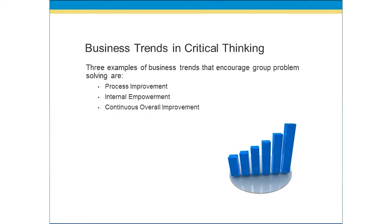There are some business trends in critical thinking that support or encourage group problem solving. The first is process improvement. Whenever an organization looks at their in-house processes and seeks out ways to improve them, that encourages a group problem-solving effort because a group is involved in the process, not just one person. Getting a multitude of people together to explore the process, look for gaps, or look for ways it can be made more effective or efficient is a trend in businesses.